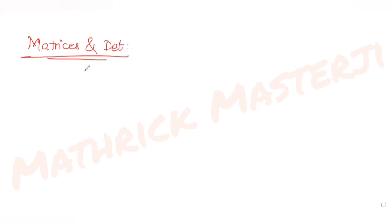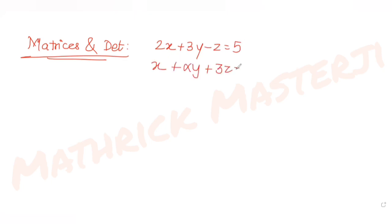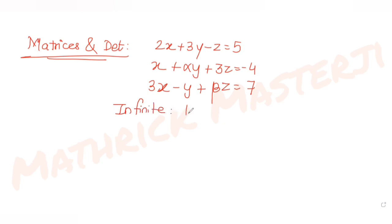Today's question is from the topic of matrices and determinants. The question tells us: if the system of equations 2x + 3y - z = 5, x + αy + 3z = -4, and 3x - y + βz = 7 has infinite solutions, then find the value of 13αβ.